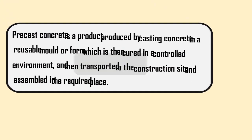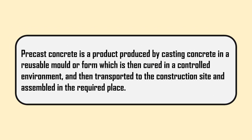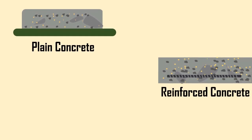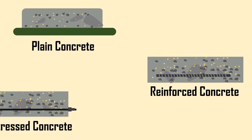In general, precast concrete is a product produced by casting concrete in a reusable mold or form, which is then cured in a controlled environment, and then transported to the construction site and assembled in the required place. These precast concrete members are cast either as plain concrete, reinforced concrete, or pre-stressed concrete.